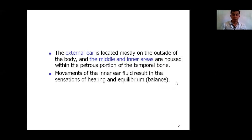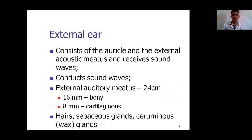The external ear is located mostly on the outside of the body, and the middle and inner areas are housed within the petrous portion of the temporal bone. Movement of the inner ear fluid results in the sensations of hearing and equilibrium. Today we will talk about the anatomy of the external ear, middle ear, internal ear, and also about the auditory and vestibular pathways.